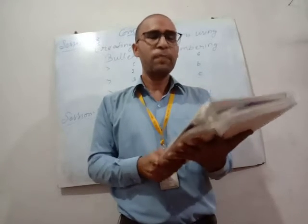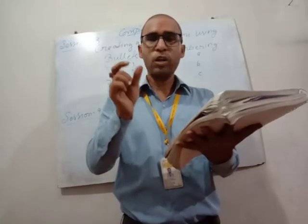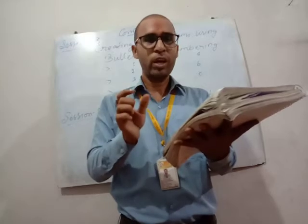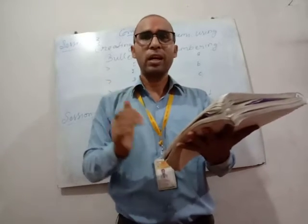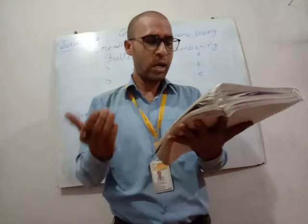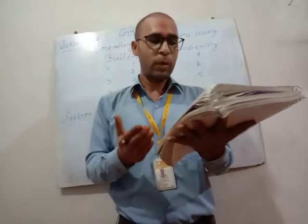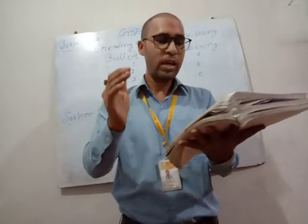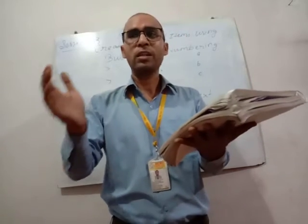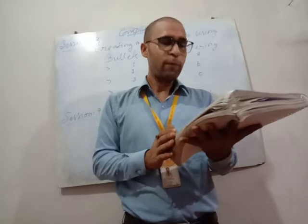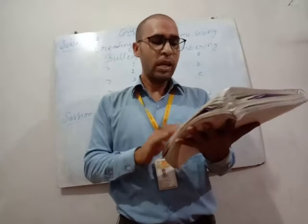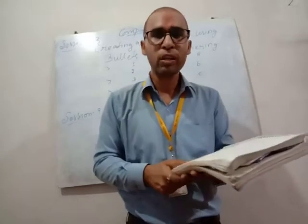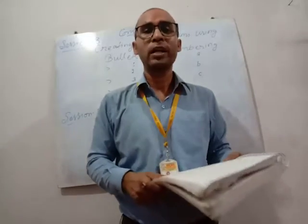To indent a paragraph, first select the paragraph. Use the increase indent button in the Paragraph group on the Home tab — this moves text half an inch to the right. Use the decrease indent button to move the text half an inch closer to the left margin.